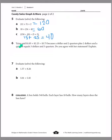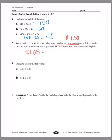Number six: Trina said one dollar and five cents plus two dollars twenty-five cents equals three dollars seventy-five cents, because a dollar and two quarters plus two dollars and a quarter equals three dollars and three quarters. Do you agree? A dollar and two quarters equals one dollar and fifty cents — not one dollar and five cents. Those are not equal, so we disagree with Trina. One dollar and five cents equals a dollar and a nickel, not a dollar and a quarter.